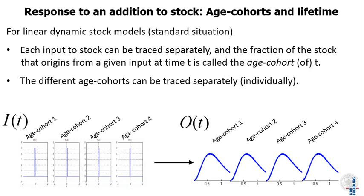When I can trace the different input peaks separately throughout the stocks and also in the outflow, so I can look at an outflow and can say, okay, this part of the outflow is associated with this input peak and this other part is associated with another input peak, then I can trace the different input fractions and I can talk of the input fractions as so-called age cohorts. I can say each input that was inserted at a certain time represents the age cohort of that time.